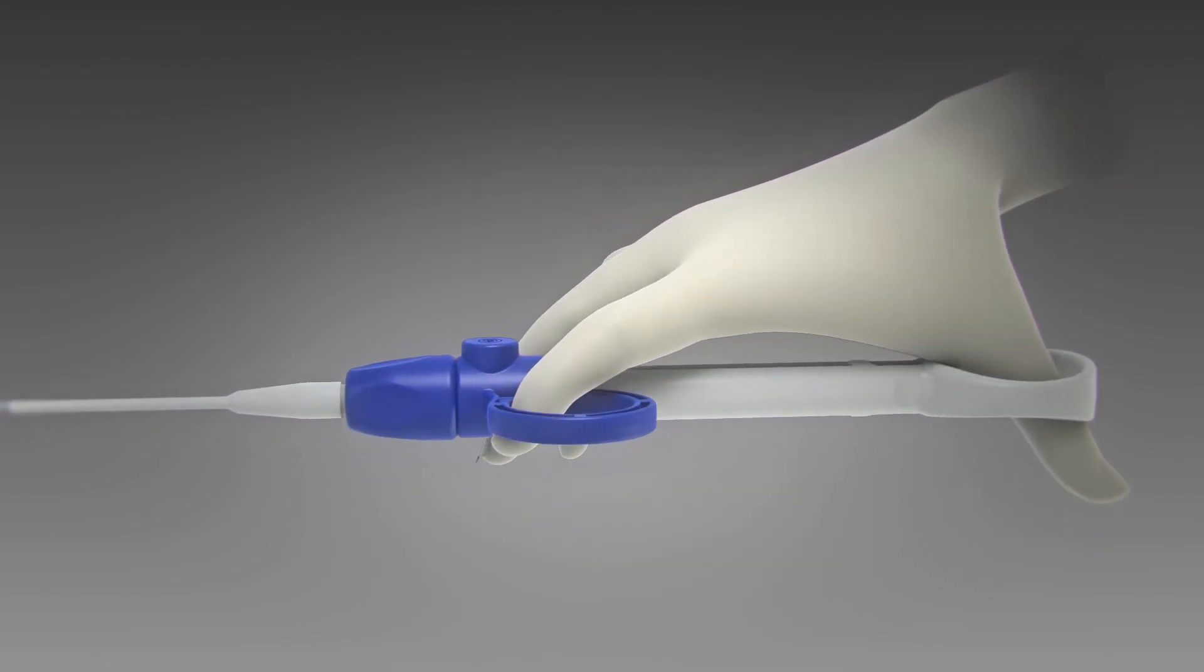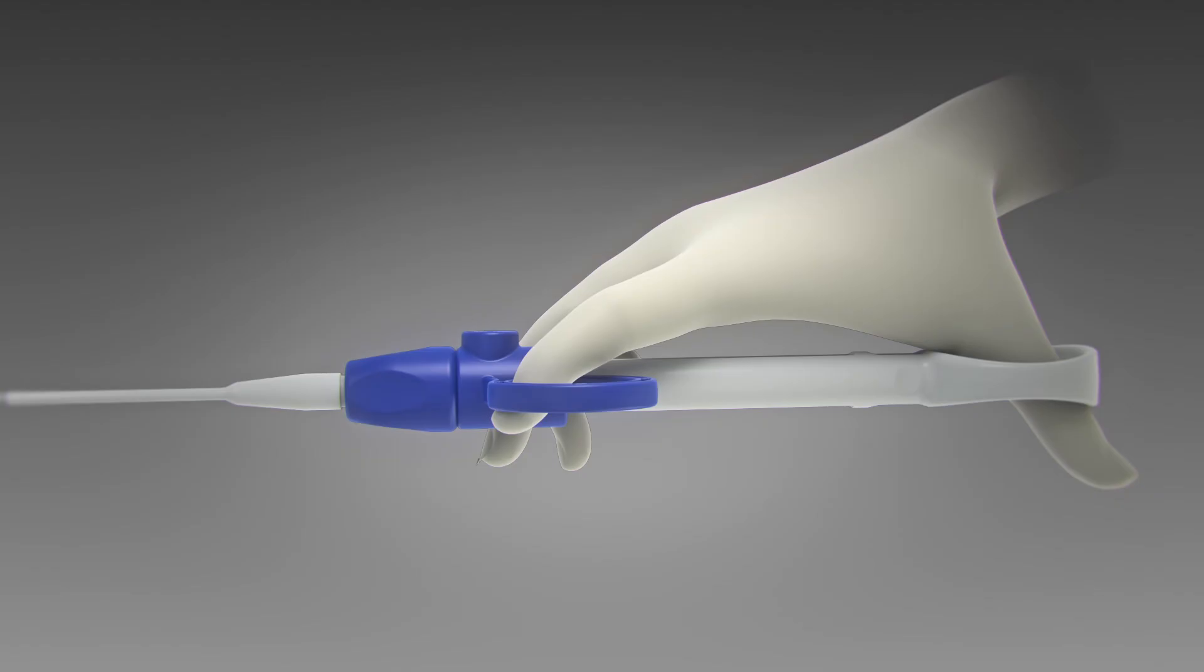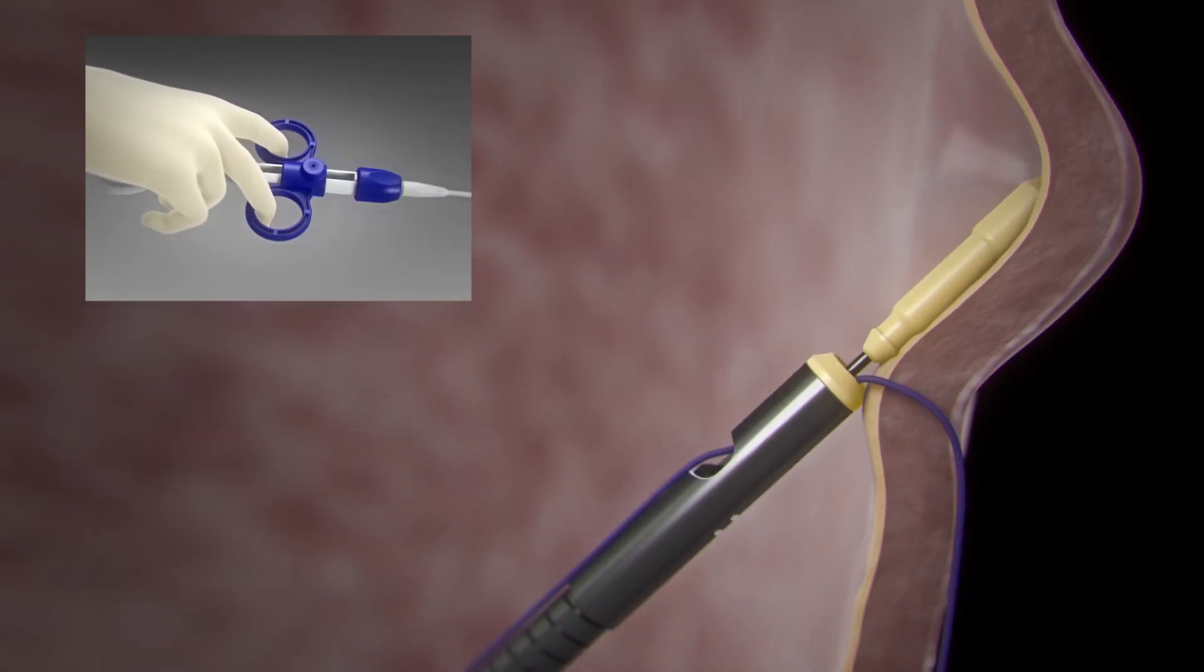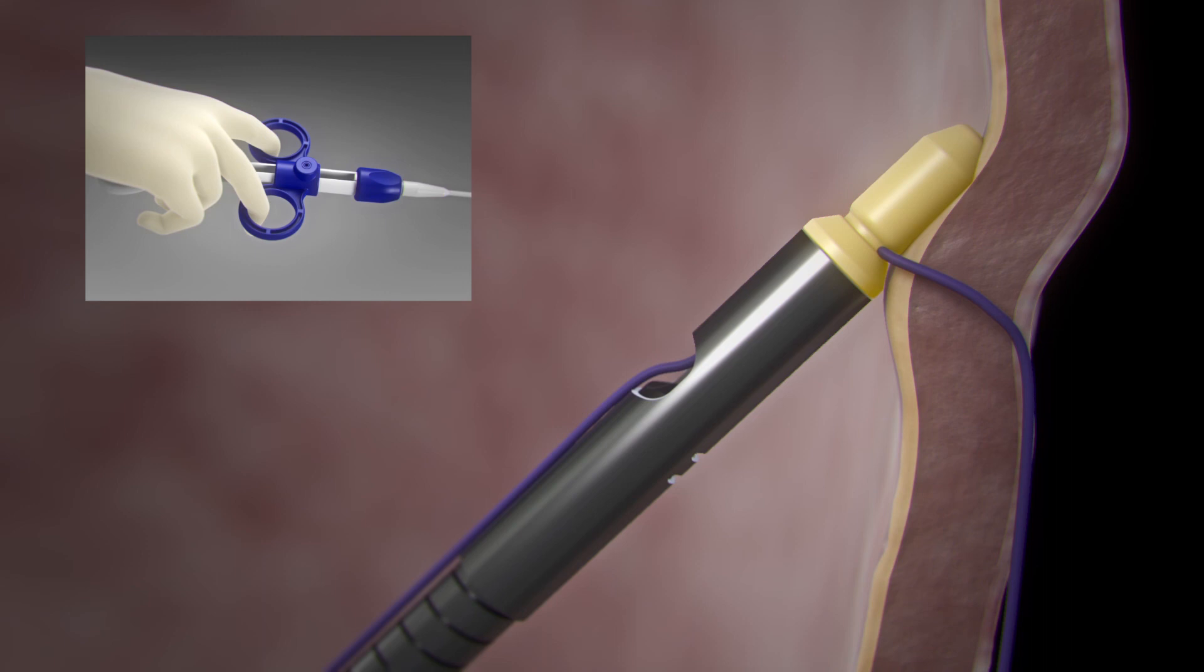Deploying the cinch is completed in three stages. Stage 1: Squeeze the cinch handle with one hand to pull the peak plug into the collar and lock the suture.